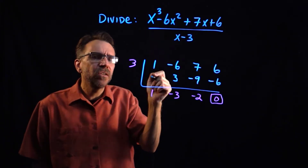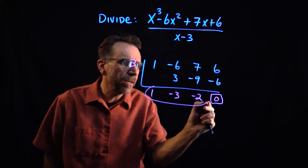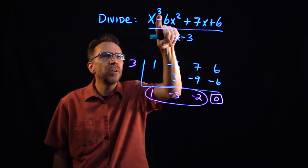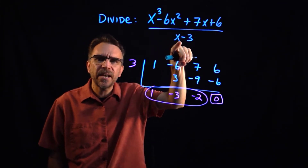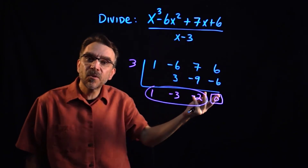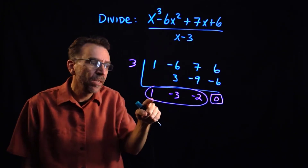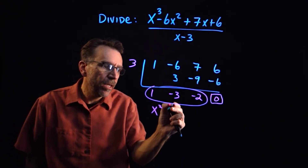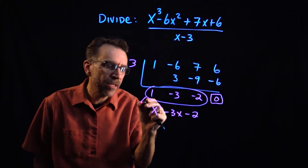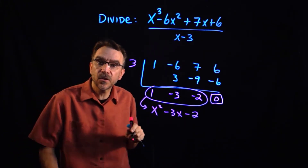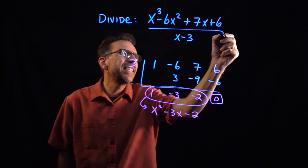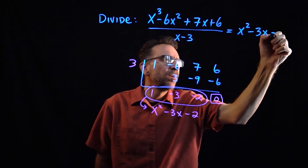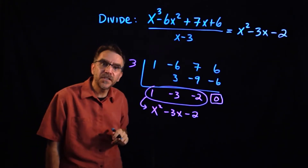The quotient is sitting right there — these are the coefficients of a polynomial of degree one less. We had a cubic divided by x, so what's left is a quadratic. The first coefficient gives x squared, then minus 3x, then minus 2. So the answer to this division is x squared minus 3x minus 2.